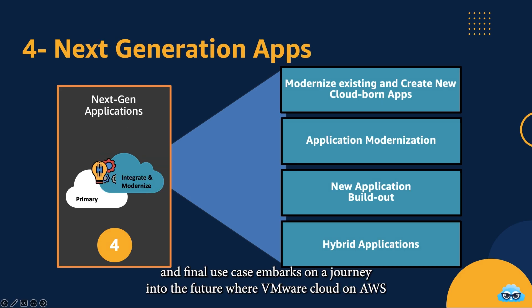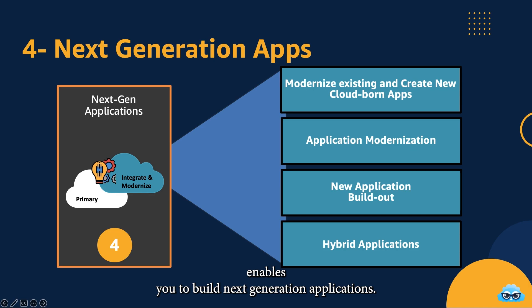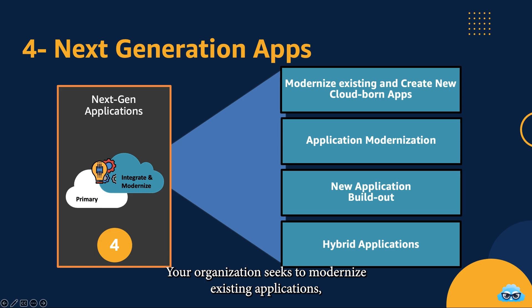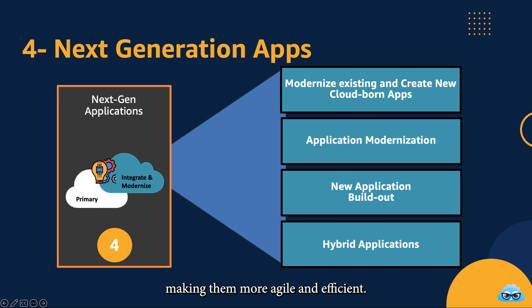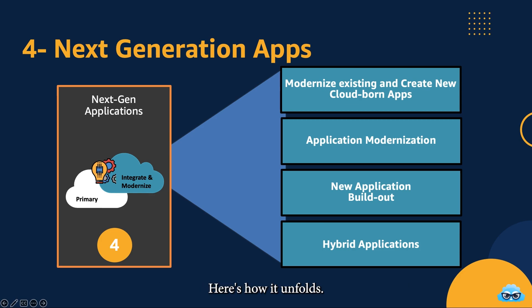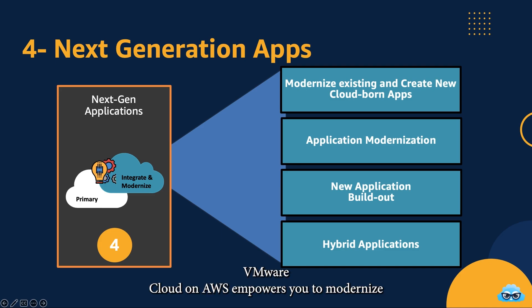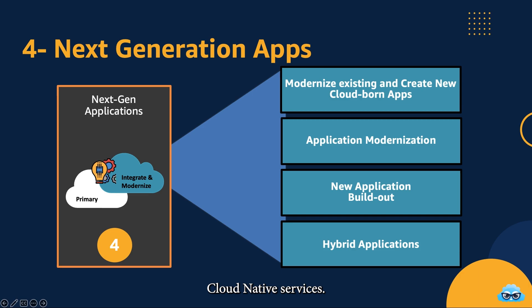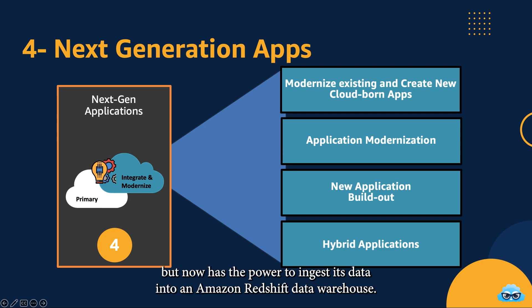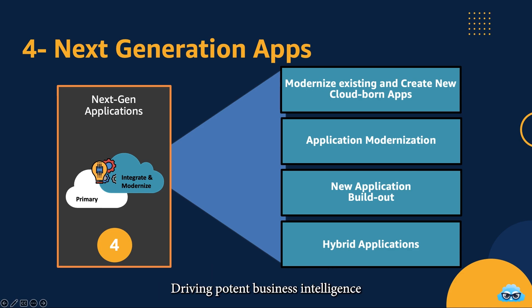Our fourth and final use case embarks on a journey into the future, where VMware Cloud on AWS enables you to build next-generation applications. Your organization seeks to modernize existing applications, making them more agile and efficient. VMware Cloud on AWS is your gateway to this transformation. Modernize Existing Applications — VMware Cloud on AWS empowers you to modernize existing applications by seamlessly integrating with AWS cloud-native services. Your SQL Server, for instance, can still run on VMware but now has the power to ingest its data into an Amazon Redshift data warehouse, driving potent business intelligence.